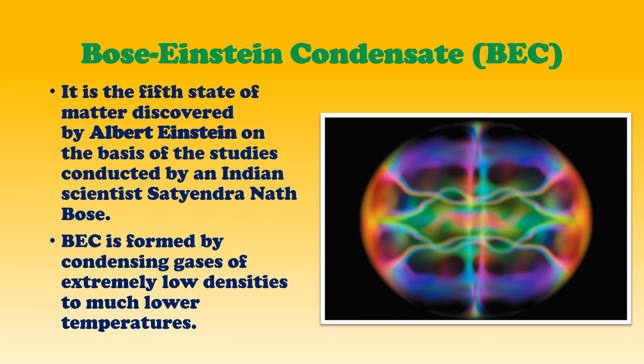Why is it called condensate? Because BEC is formed by condensing gases of extremely low density to a much lower temperature. In contrast, plasma was formed when gas temperature was increased — BEC is the reverse: gases are cooled down to extremely low temperatures.